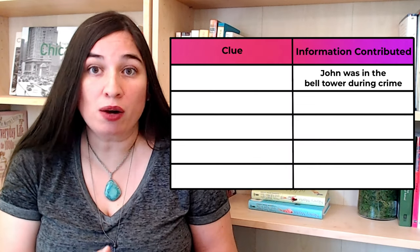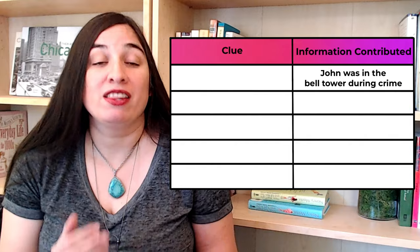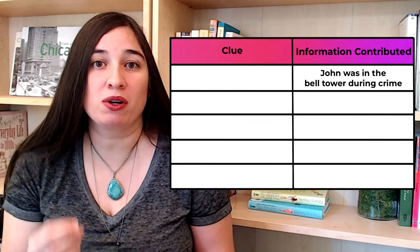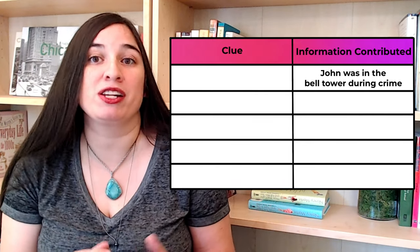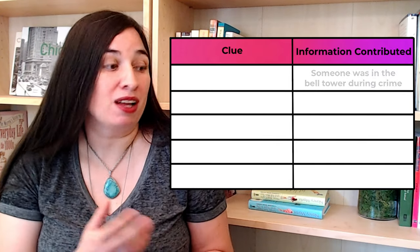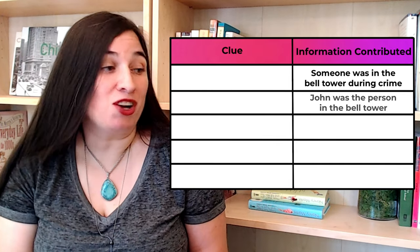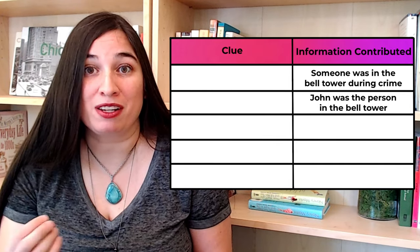I recently added another step in between these two, and that's to take my list of important information and ask if there's any way I can split one row into two. For example, let's say I have a line on my spreadsheet that says, 'John was in the bell tower during the crime.' This is something our sleuth must know in order to solve the case, but we might easily split this information into two pieces, like this: 'Someone was in the bell tower,' and 'John was the person in the bell tower.'